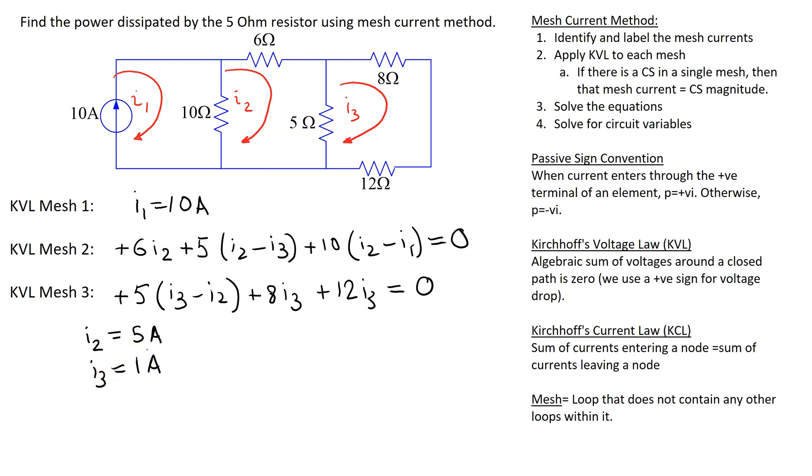Once the mesh currents are found, then we can solve for the desired circuit variables. In this case, we have to find the power dissipated through the 5 ohm resistor. This can be done in multiple ways using the mesh currents. For instance, we can find this voltage drop V0 across this resistor first. V0 will be the resistance multiplied by the current.